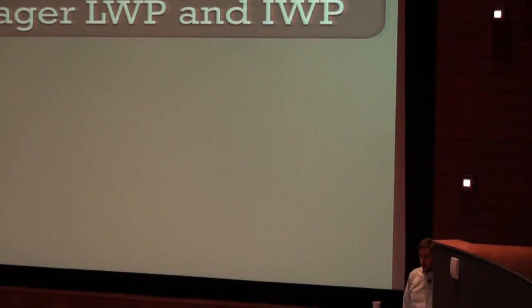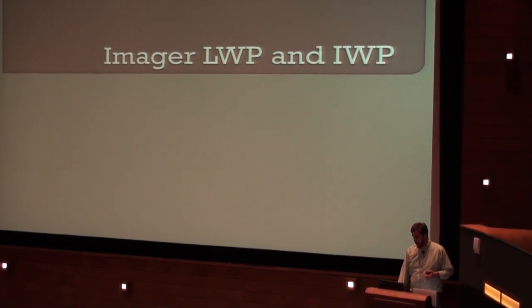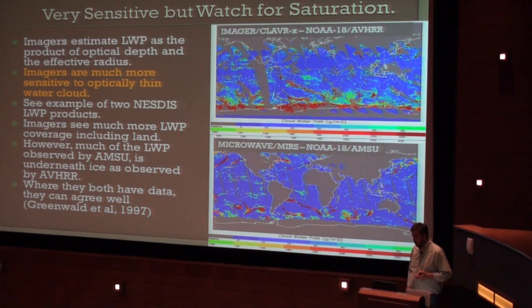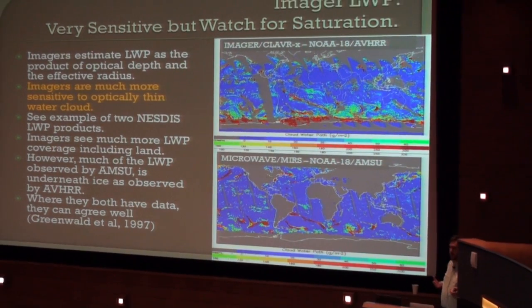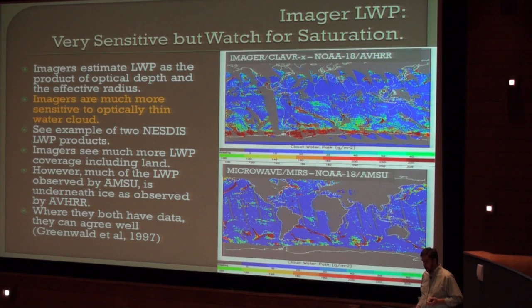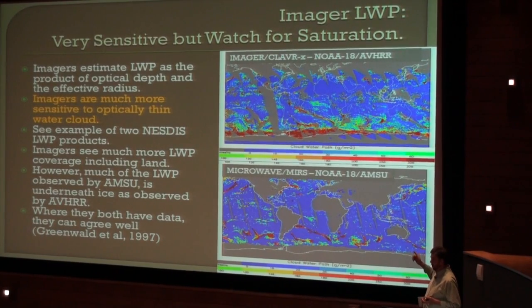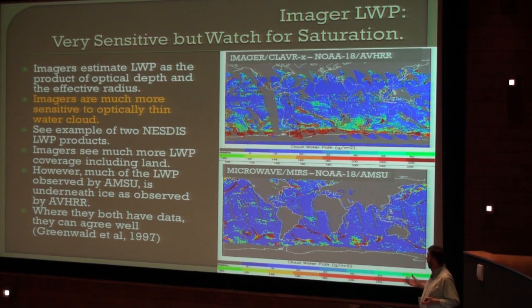I'm going to skip optical depth and particle size and jump into liquid water path and ice water path, because I know the microwave guys following me will have a lot to say. Imagers do, of course, derive these properties — we've done this for many years. I want to show how an imager compares to a current microwave product. These are the two old-time CESDIS products. CLAVR-x is the CESDIS imager product; MIRS microwave is on the bottom. Both of these products exist on VIIRS and other sensors.